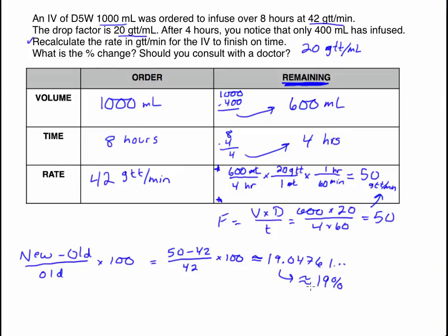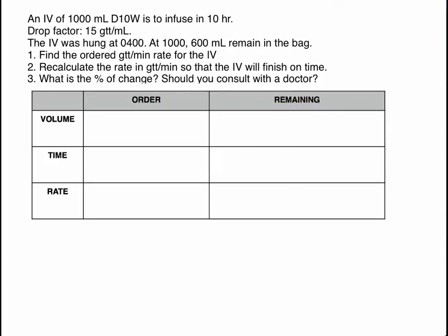Let's look at one more example — another rate recalculation problem. An IV of 1,000 milliliters is to infuse in 10 hours. The drop factor is 15, so there are 15 drops for every milliliter. The bag was hung at 0400 and we're coming back at 1100 and see that 600 milliliters remain. We need to find the drops per minute rate for the order, recalculate that rate to finish on time, and then find the percent change.